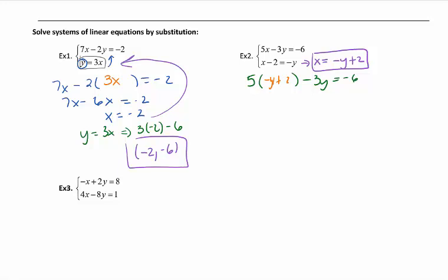So I'm going to plug in the negative y plus 2, which is here for x. So I'm going to distribute. It gives me a negative 5y plus 10 minus 3y. I have one variable so I can solve this. This gives me a negative 8y plus 10 equals negative 6. Subtract 10 from both sides, which gives me a negative 16. Divide both sides by a negative 8. Be careful. This gives me a positive 2.